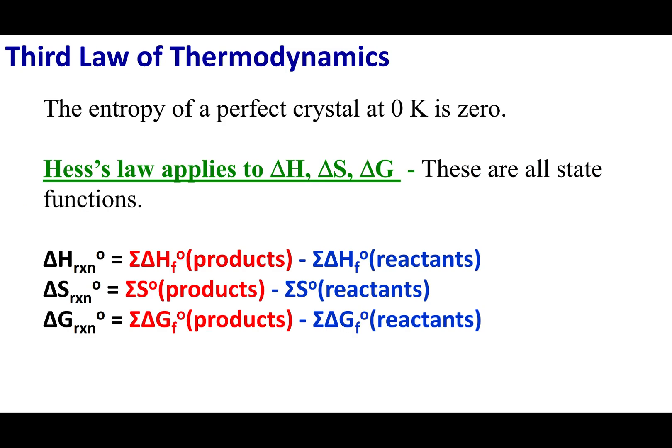So let's go ahead and shift gears a little bit. So what I want you guys to notice is that delta H, delta S, and delta G are all abbreviated with capital letters. And the reason for this is that these are all state functions. Now remember a state function, I don't care about the path. And if that's the case, then Hess's law applies to each one of these.